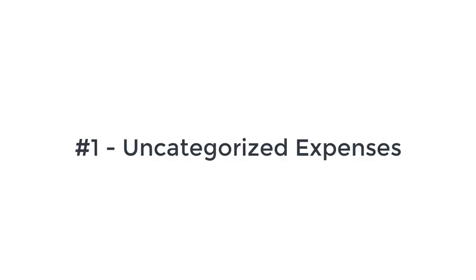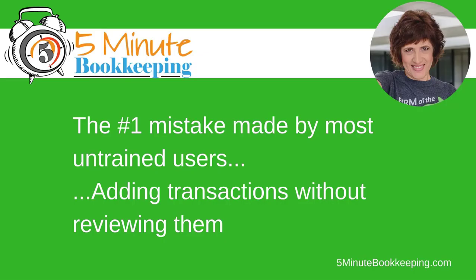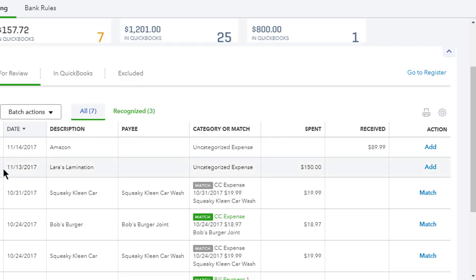Number one: uncategorized expenses in QuickBooks Online. Have you seen this in your profit and loss report? Where do uncategorized expenses come from? It all starts from the banking transactions downloaded from your bank or credit card account. When banking transactions are downloaded into QuickBooks Online, QBO can't always figure out how to categorize the transaction. Here's an expense for LARIS lamination — you can see that it's categorized to uncategorized expense, and most untrained users will just click add.